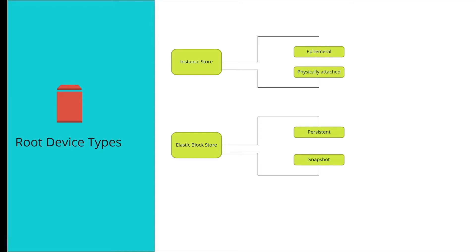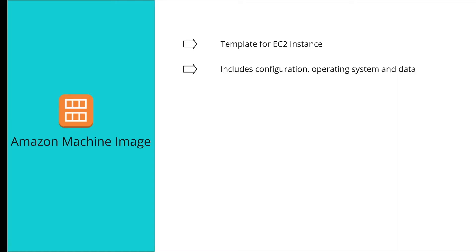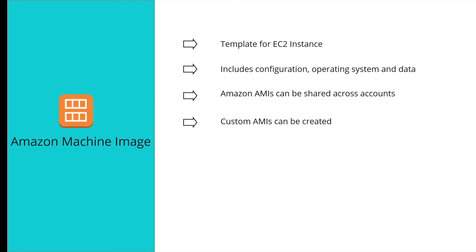EBS is like a virtual hard disk in the cloud, and you can snapshot EBS volumes. For most workloads, EBS is preferred because it provides many capabilities. An Amazon Machine Image, or AMI, is similar to a Docker image — it's a template for creating an EC2 instance. It includes all configuration, operating system, and data required. AWS provides many AMIs, custom AMIs can be created, and commercial AMIs are also available in the AWS Marketplace.